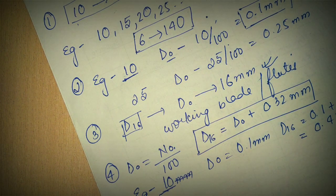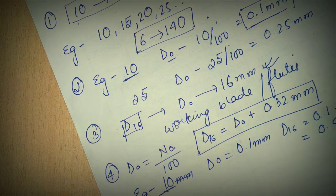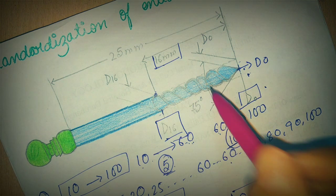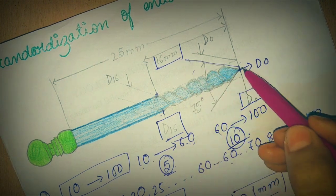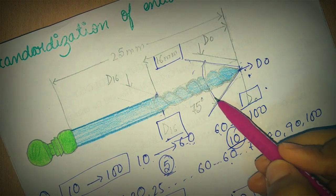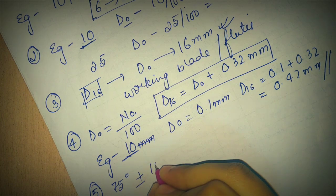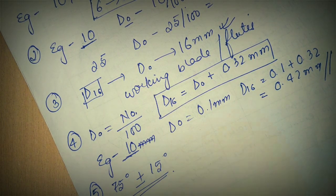Now coming to the fifth point. The tip of the instrument has an angle of 75 degrees plus minus 15 degrees. This is the angle. As you can see over here, this is the angle. And this angle will vary from 75 degrees plus minus 15 degrees. This is the angulation of an endodontic hand instrument.